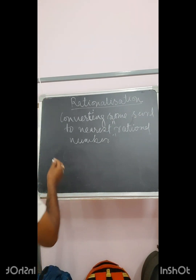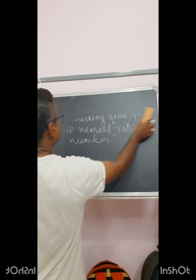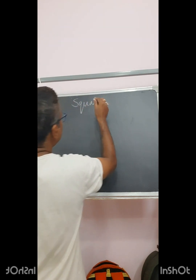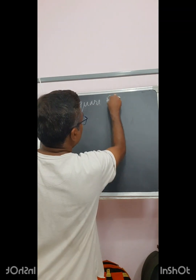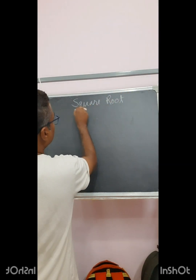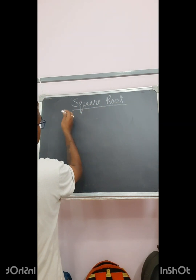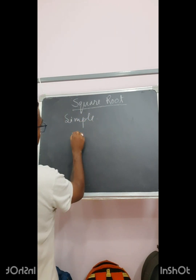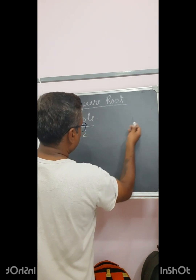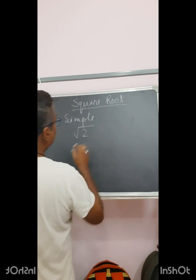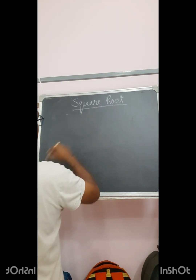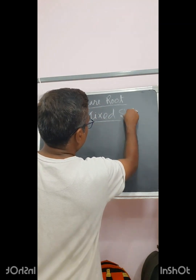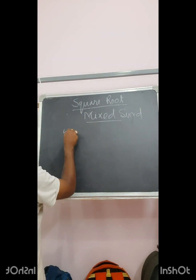Now I will show some square root or cube root. To find the square root or cube root, there could be two methods. For a single simple surd, finding the square root is not a problem because I can use the decimal method. But my intention is to show you the example for a mixed surd, where it will be very useful to know how to find the square root of a mixed surd.